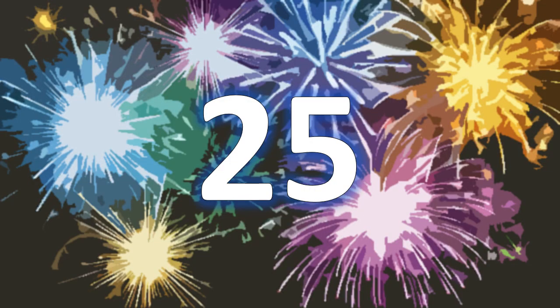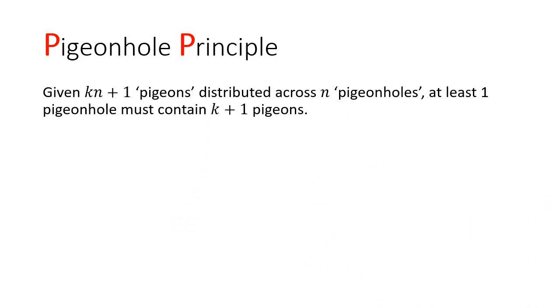Hopefully the story of an unlucky teacher gives you an overview of the pigeonhole principle. Formally, the principle states that if we are given kn plus 1 pigeons, distributed across n pigeonholes, at least one pigeonhole must contain k plus 1 pigeons.